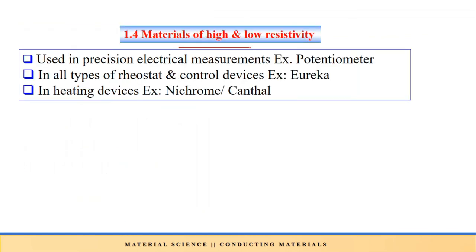Next is materials of high and low resistivity. Such materials are used in precision electrical measurements like potentiometers, all types of rheostats and control devices such as Eureka, and in heating devices such as nichrome and kanthal. Different materials are used for different applications.